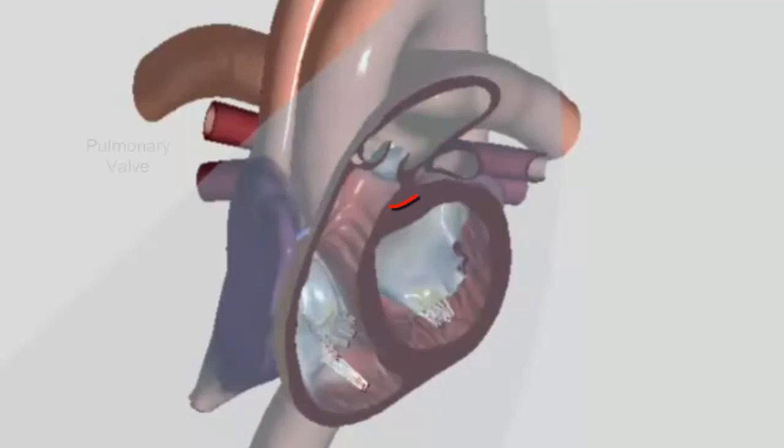We can also see that the pulmonic valve is starting to open right here. And this is because the force of that right ventricular contraction has created enough pressure to overcome the force of the blood that's on this side of the valve that's already in the pulmonary artery. So the pressure here has increased, and now the blood is going to flow through the pulmonic valve into the pulmonary arteries.